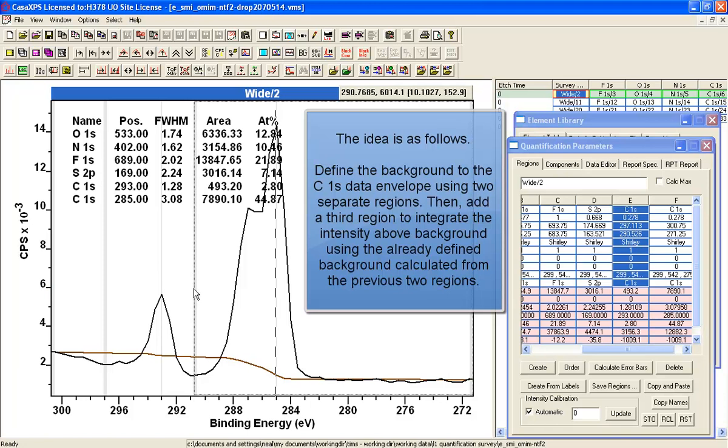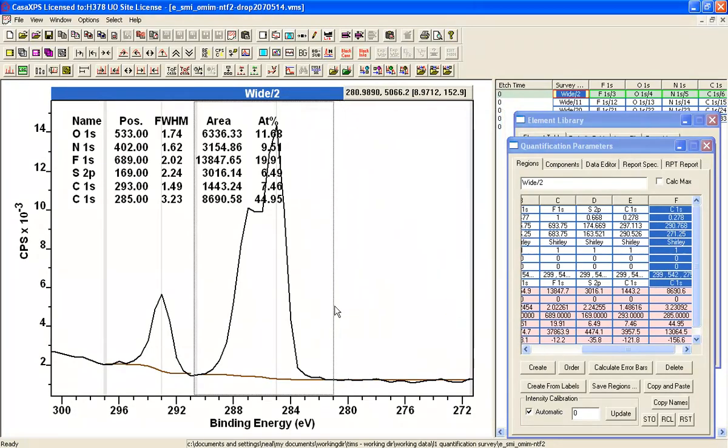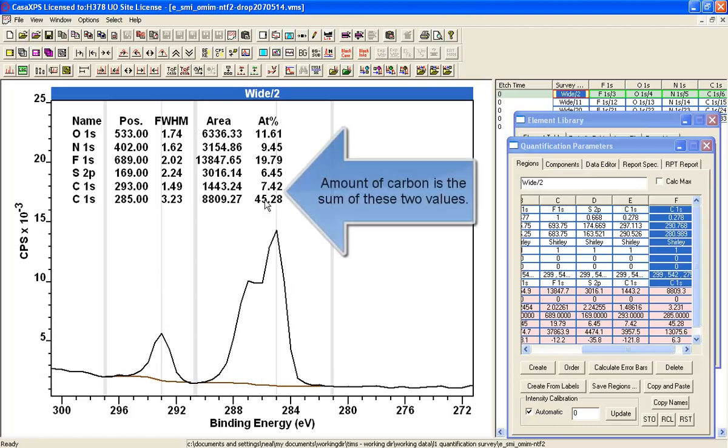So I've got two regions now to define the background. So I need to add these two intensities together to find the amount of carbon that I've got. These two numbers here must be added together to give me the carbon. Now, I could also do another little trick.